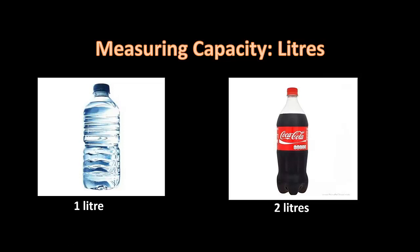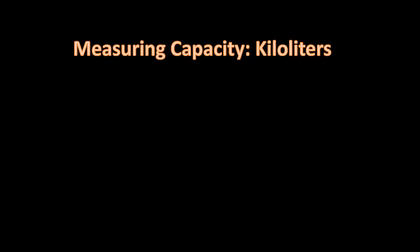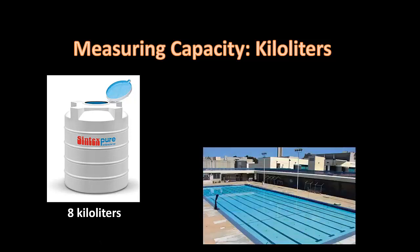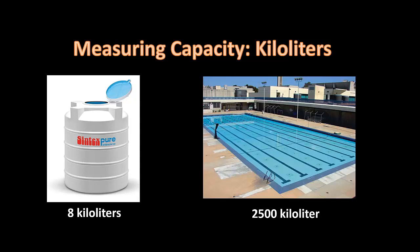But now imagine there's a very big pool in front of you and you're about to swim in it. Before you swim in it, you want to know how much water there is. We can't use liters because a pool is a very big unit, so we'd be using kiloliters. A large water tank would be like 8 kiloliters, and this Olympic-sized pool would be around 2,500 kiloliters.